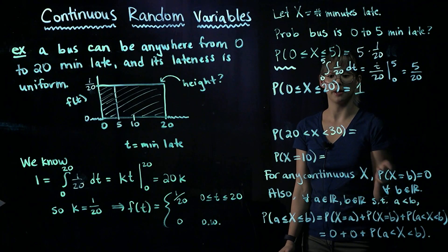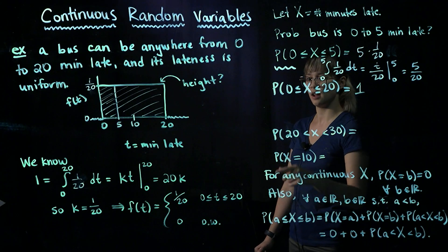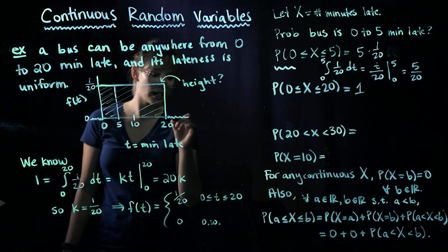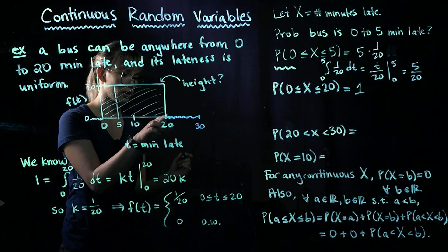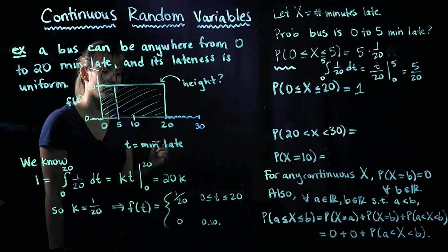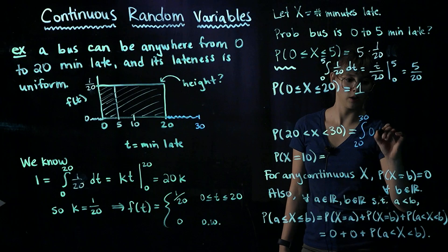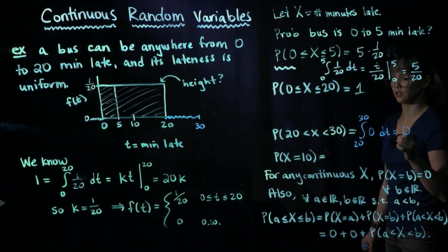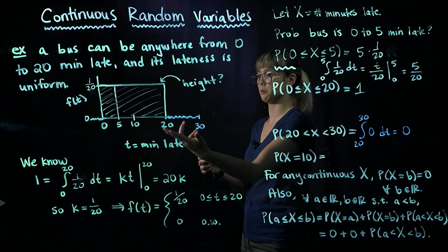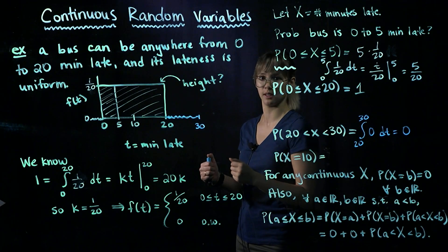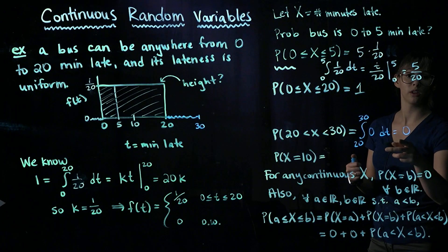What's the probability that the bus is 20 to 30 minutes late? We'd integrate from 20 to 30, but the PDF is 0 there, so the integral of 0 dt from 20 to 30 is definitely 0. We can also think about it in terms of the problem: the bus runs anywhere from 0 to 20 minutes late, so it cannot be more than 20 minutes late, making the probability 0.